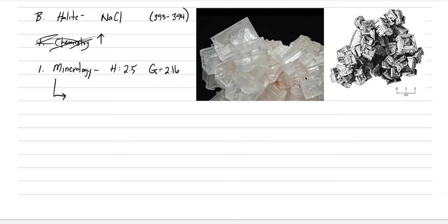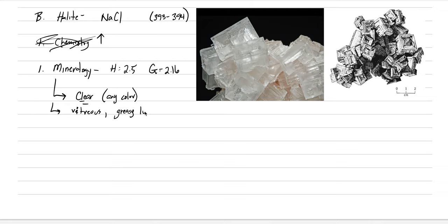There are a couple of things we see when identifying halite. Specimens are generally clear, but they don't have to be — they can be any color, where color is staining by impurities. Most of the time you'll see them as clear with a vitreous luster, but if there have been too many hands touching the samples or it's been out in nature, salt starts to dissolve and we get a greasy luster, which is actually more common for identifying halite.